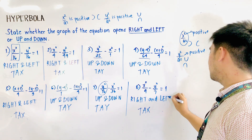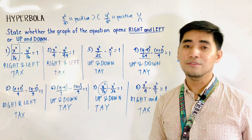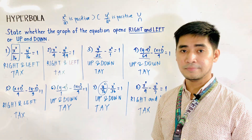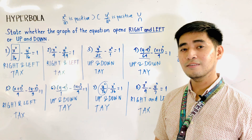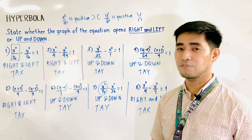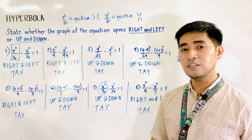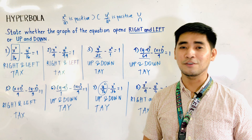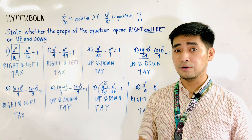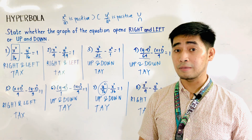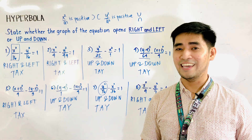Let me repeat the mnemonic. If x squared over a squared is positive — TAX — it will open right and left. If y squared over a squared is positive — TIE, transverse axis vertical — it will open up and down. In determining the nature of the graph of the hyperbola, all you have to do is determine first the transverse axis, or which variable is positive, and you will know if it opens right and left or up and down.